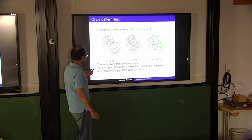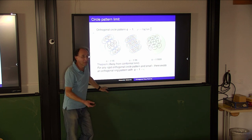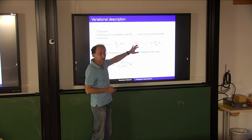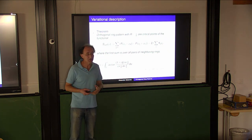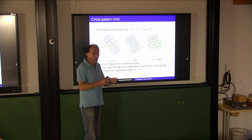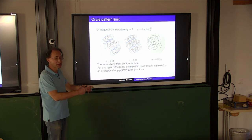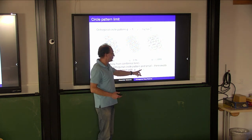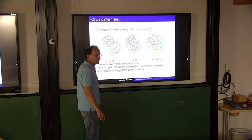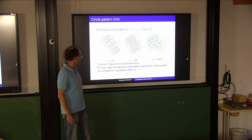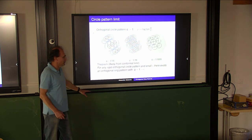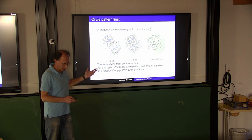The theory of circle patterns is simpler than the theory of ring patterns. This functional is not a convex functional, so it can be used for computations but not easily to prove existence in general. If you are close to the circle pattern case, you can prove the existence of the circle pattern, then perturb a little bit by changing q to 1 minus epsilon. By doing asymptotic analysis you can prove existence by implicit function theory. So for any rigid orthogonal circle pattern, for small epsilon, there exists an orthogonal ring pattern with that q.